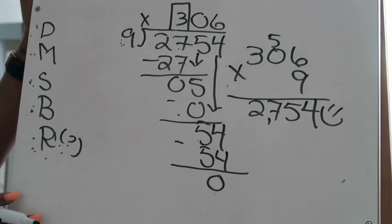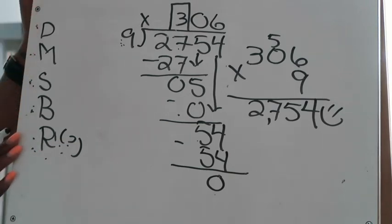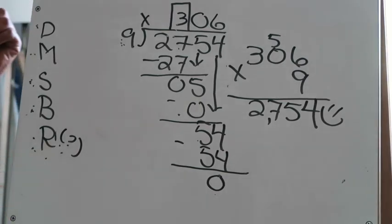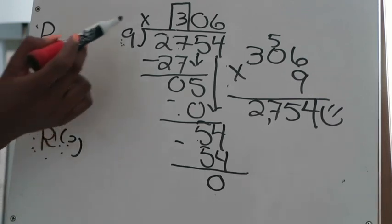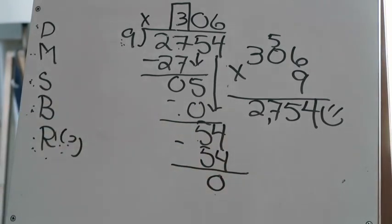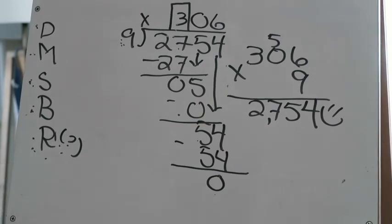For lesson 2.2 I'm only doing one example because it's really just about knowing your division steps, which we've practiced in all three problems. Once you have the silly saying 'Does McDonald's Sell Burgers Raw' written on your paper, it's a matter of using your estimate to place the first digit, going through your division steps, and always checking your work.